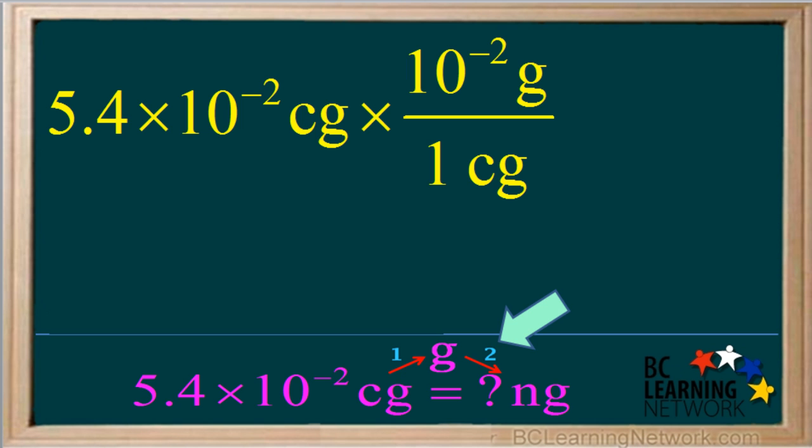In step 2, we want to convert grams into nanograms. So again, we write a times and a line. We want to get rid of grams, so we put it on the bottom of the conversion factor. And we want nanograms, so we write it on the top. We write a 1 by the nanograms since it has the prefix. The prefix nano means 10 to the negative 9th. So we write 10 to the negative 9th by the grams. One nanogram is equal to 10 to the negative 9th grams.